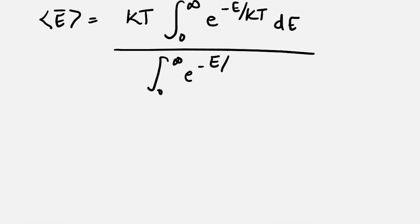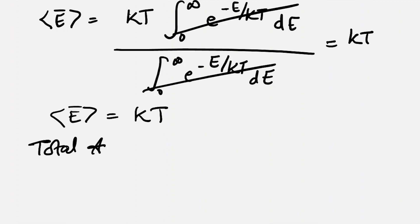Simplifying this, we get average energy equals kT times the integral from 0 to infinity of E times e to the minus E by kT dE, divided by the integral from 0 to infinity of e to the minus E by kT dE. The whole integration terms cancel each other, and our average energy comes out to be kT.